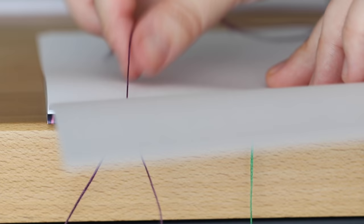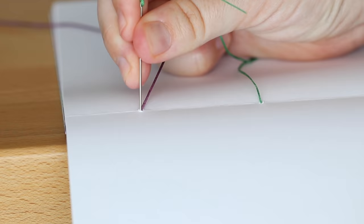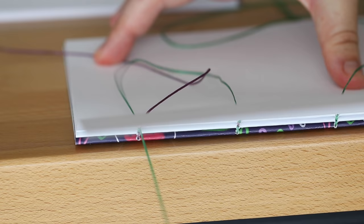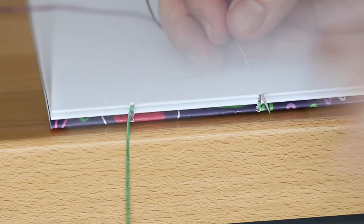On the section with two colors of thread, you'll start to see a cool pattern form where the colors alternate. And make sure you're not piercing through the other thread while you're pulling the needle through the outside of the signature. If your binding needle has a sharp tip, sometimes it could snag the other thread.